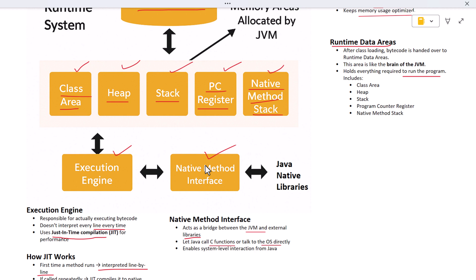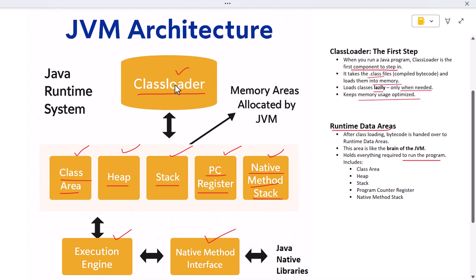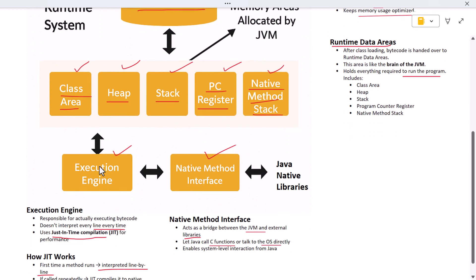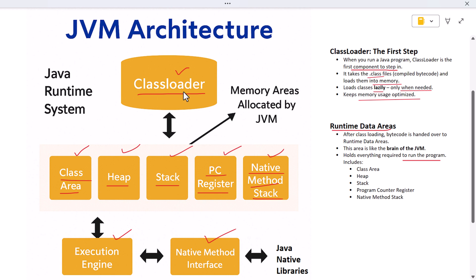Let's quickly trace how a simple Java program moves through the JVM. You write the code and compile it. The class loader picks up the class and sends it to the runtime data area. Objects are created in the heap, local variables live in the stack, instructions are tracked in the PC register, and if any native code is called, the native method stack steps in. The execution engine reads the bytecode and, when needed, compiles it to machine code for blazing fast performance. Understanding this architecture not only helps you write better Java code — it also helps you debug performance issues, memory leaks, or crashes more effectively. Thanks for watching and I'll see you in the next video.